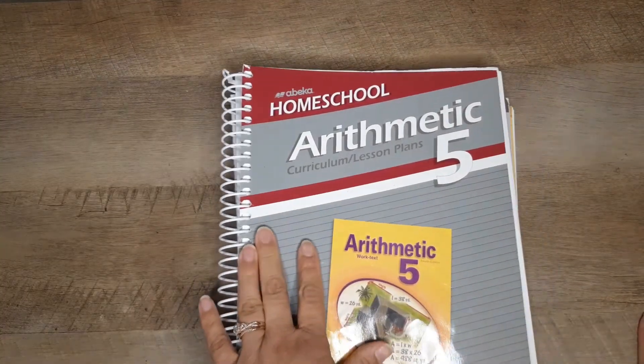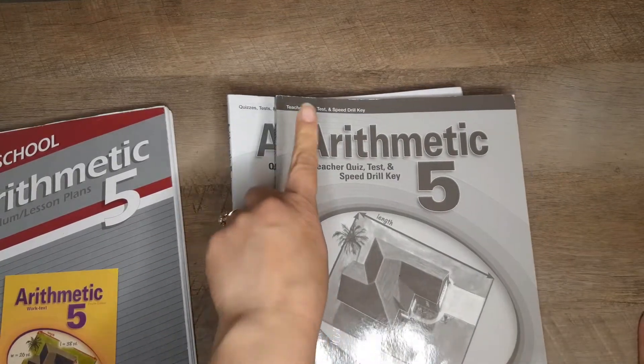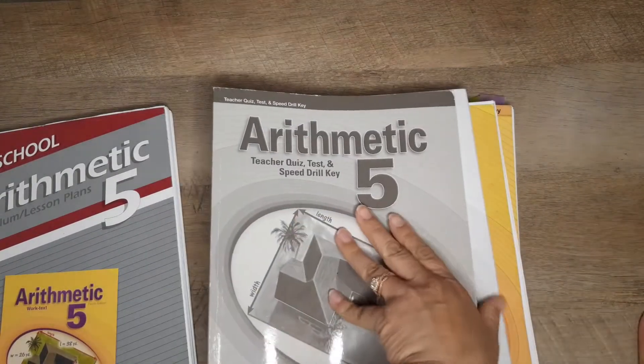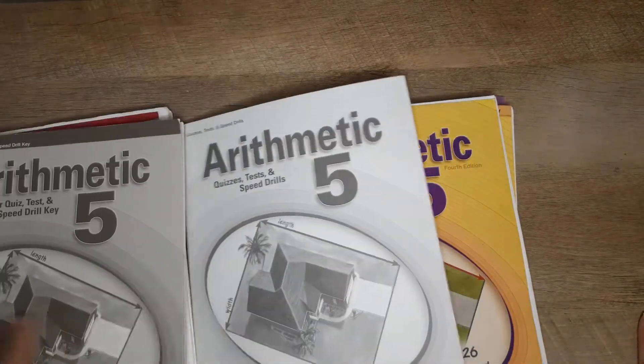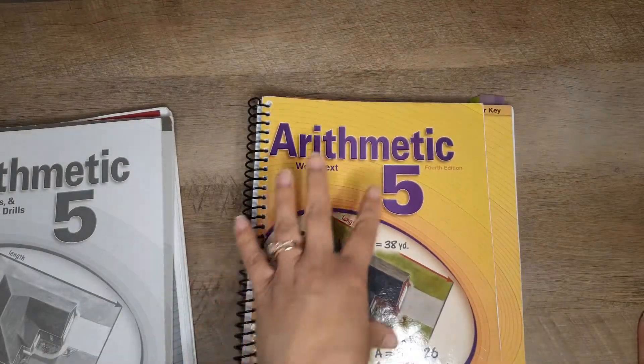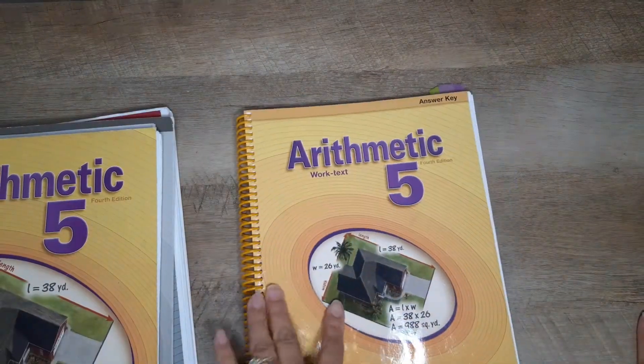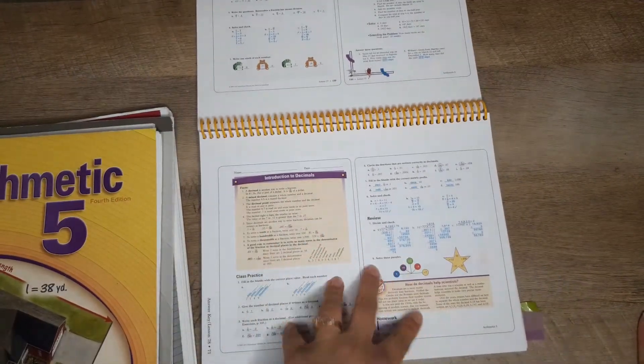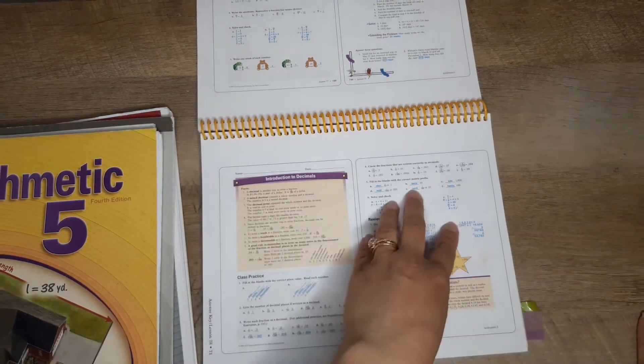Next I'm going to share with you the arithmetic portion. Everything's pretty much laid out the same. You would have your teacher quiz, test, and speed drill key. These would be the tests. This is the student workbook but I took it apart and spiral bound it. And then this is the teacher key. The pages are similar to how the language portion is set out. It would be front and back right here for your student. On the key page it's just side by side.